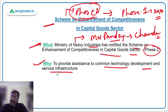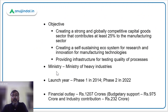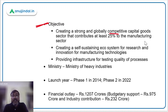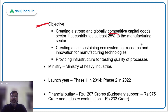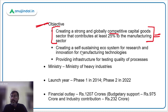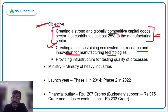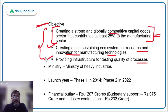The broad objective of this scheme is to create a strong and globally competitive capital goods sector that will contribute at least 25 percent to the manufacturing sector of the country. This is the most important objective to remember. The second objective is to create a self-sustaining ecosystem for research and innovation for manufacturing technologies. The third is providing infrastructure for testing quality of processes.